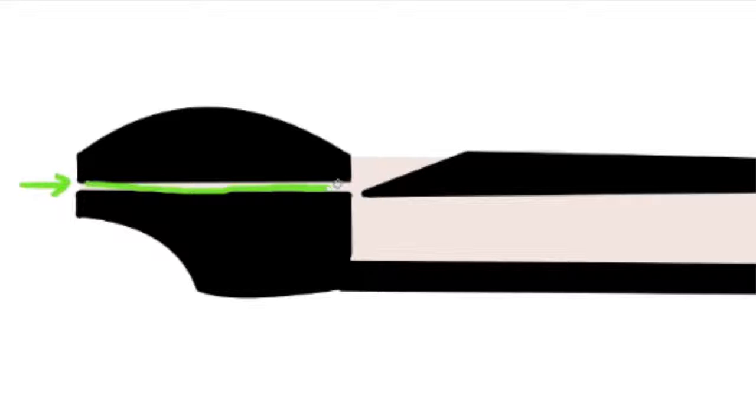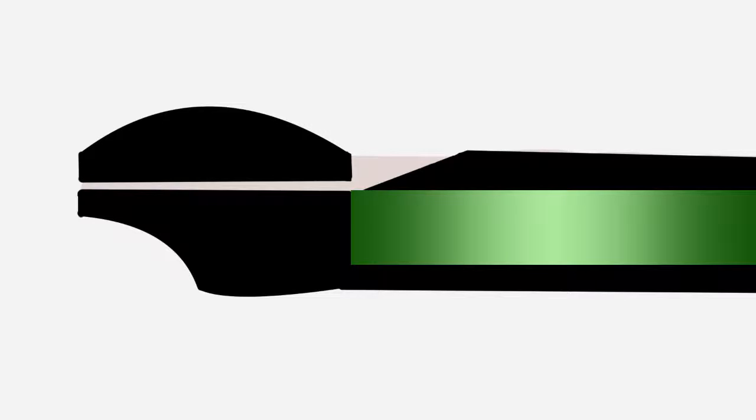Now when the air reaches this point, it oscillates between moving above and below this edge. This creates a standing wave in the main pipe of the recorder, due to the wave reflecting back out of phase and interfering constructively and destructively with itself.